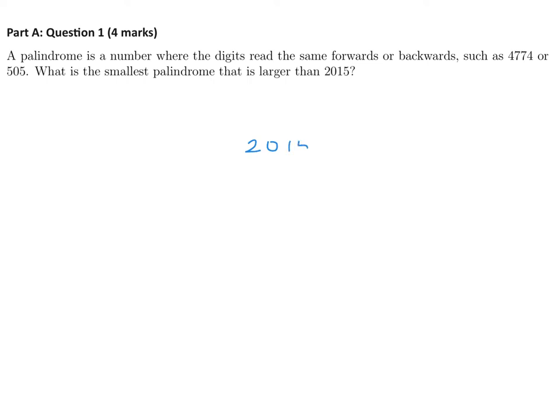If this number is now going to be a palindrome, we want to make sure that it's as close to 2015 as possible. So most likely, if the first digit is 2, the last digit is going to be 2 also, because we're not going to go into the 3000s or 4000s.